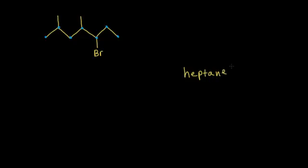Now you figure out which way to number it. Do I number it from the left side of the chain or from the right? When you have a halogen and alkyl groups, you want to give the lowest number to either the alkyl group or the halogen. If you start from the left, you give that alkyl group a two. If you start from the right, you give the halogen a three. So the lowest number wins — I'm going to start from the left.